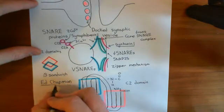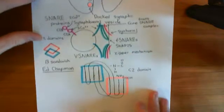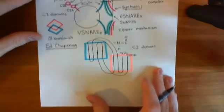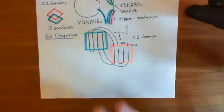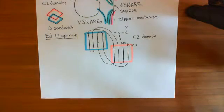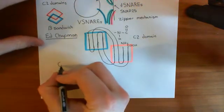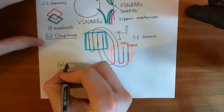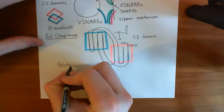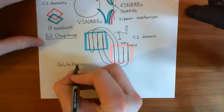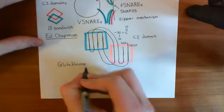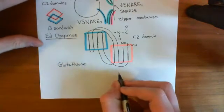So Ed Chapman. Let's discuss the experiment that was done. In order to understand the experiment we're going to do, I need to tell you a little bit about a molecule known as glutathione. Glutathione is going to be a prerequisite for understanding this experiment.